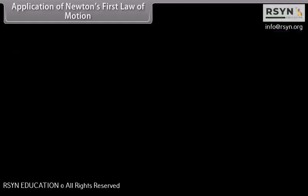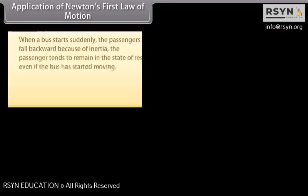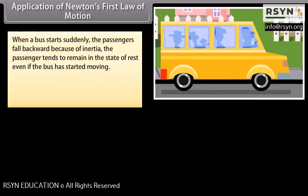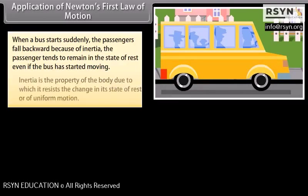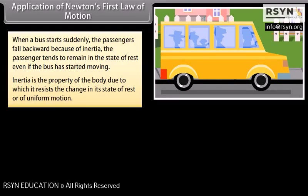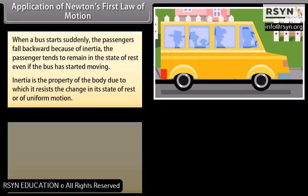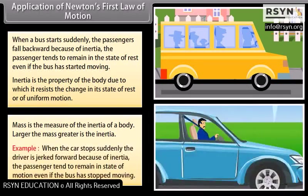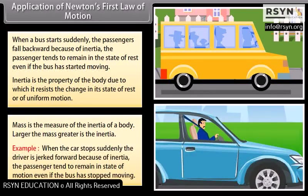Application of Newton's first law of motion. When a bus starts suddenly, the passengers fall backward because of inertia. The passenger tends to remain in the state of rest even if the bus has started moving. Inertia is the property of the body due to which it resists the change in its state of rest or of uniform motion. Mass is the measure of the inertia of a body. Larger the mass, greater is the inertia. When the car stops suddenly, the driver is jerked forward because of inertia.